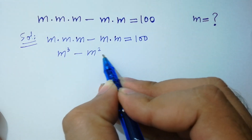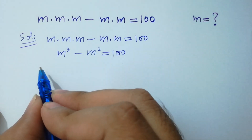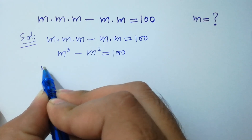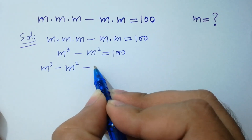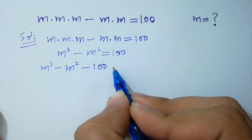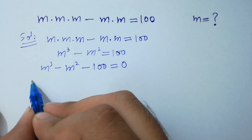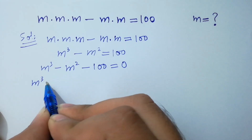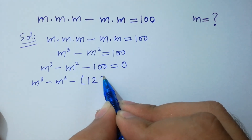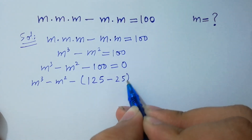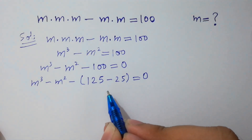Equal to 100. So M cube minus M square minus 100 equals zero. I can consider 100 as 125 minus 25, since 125 minus 25 is 100.